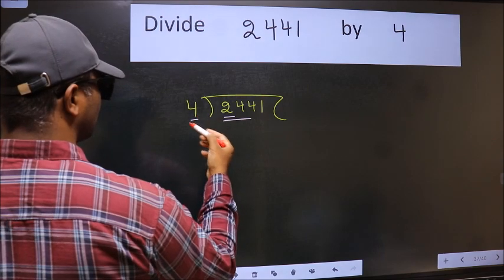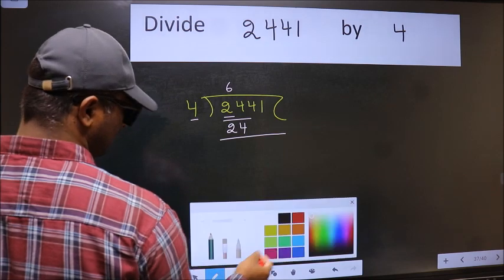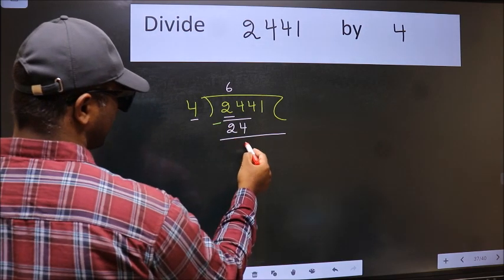When do we get 24 in the 4 table? 4 times 6 is 24. Now we should subtract. We get 0.